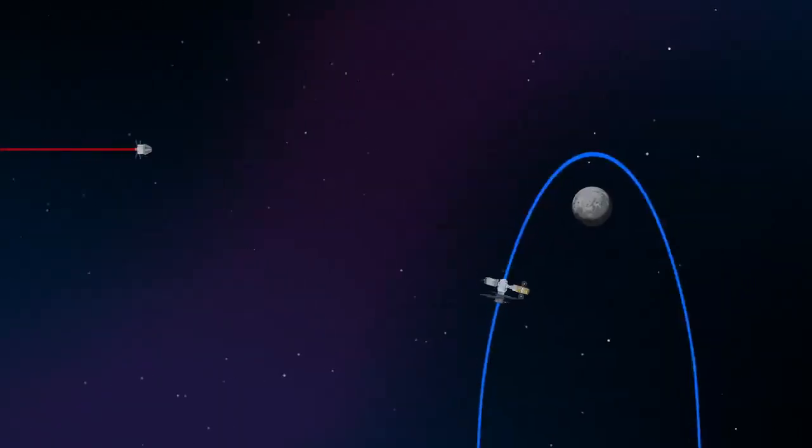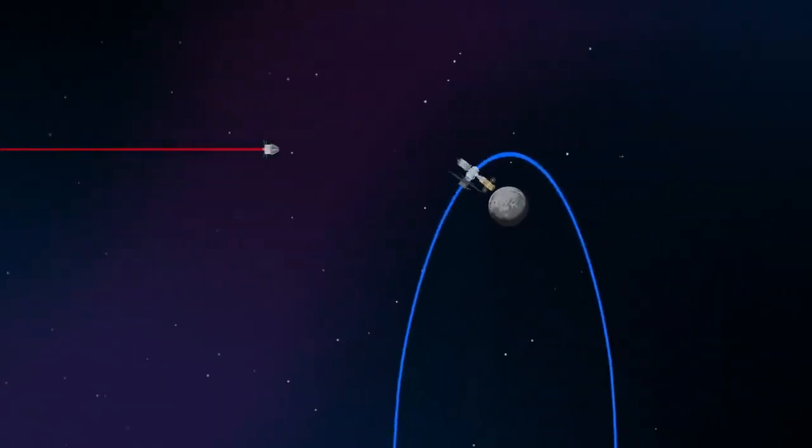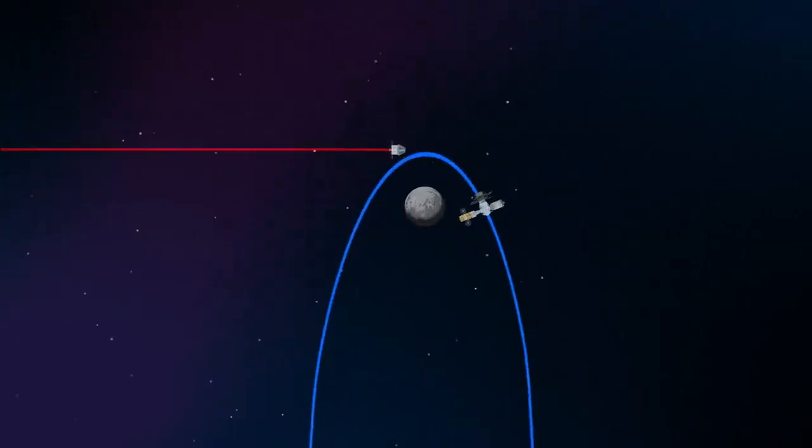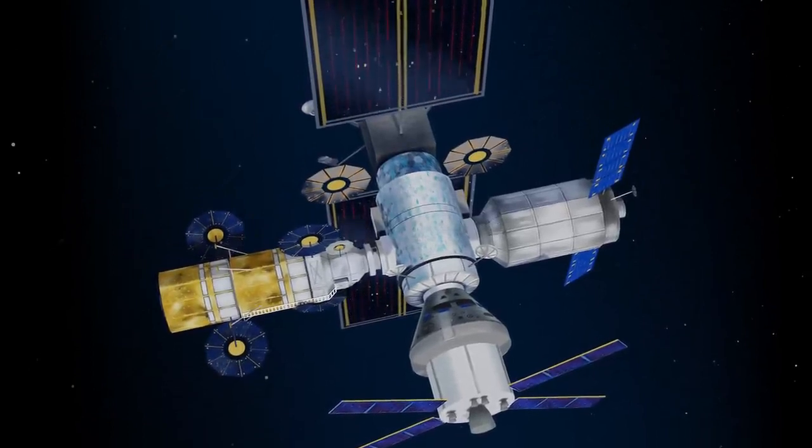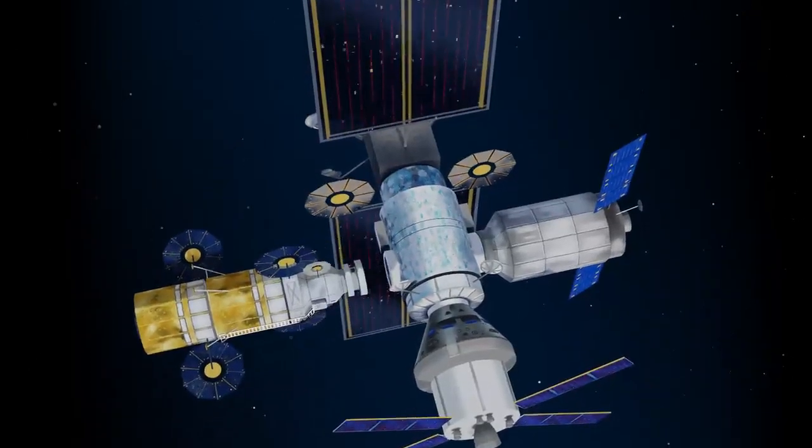Returning to our crew as they approach Gateway, the Orion must match the elliptical orbit of the station in order to successfully dock. Once on board, pre-selected crew members transfer to the lunar lander, while those assigned to Gateway remain on station.